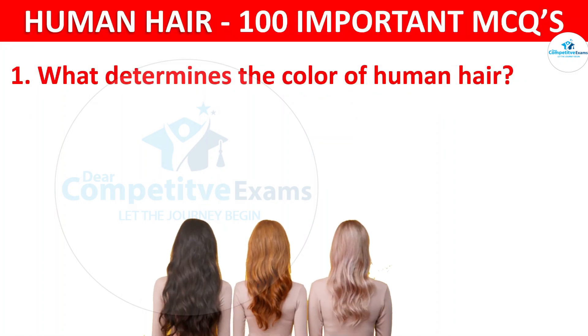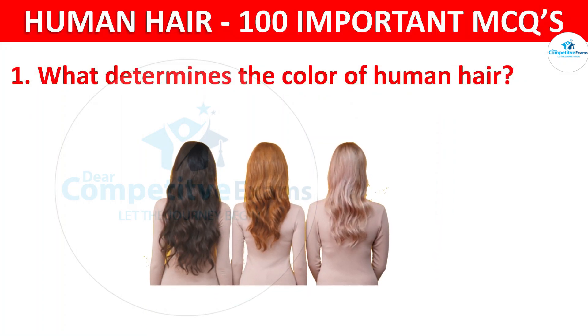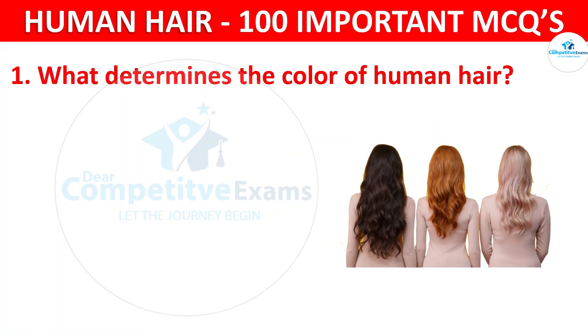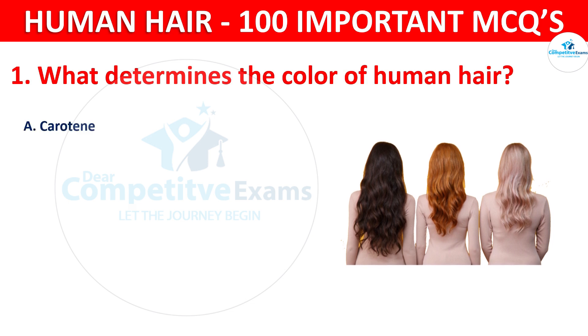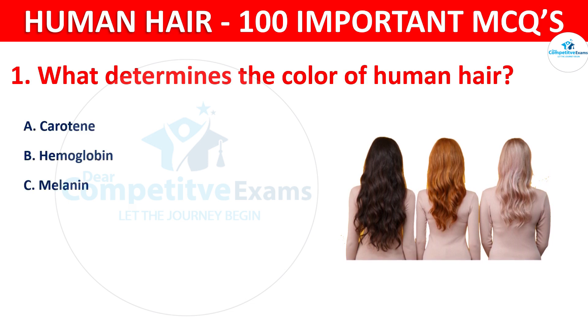What determines the color of human hair? Your options are keratin, hemoglobin, melanin, or collagen.